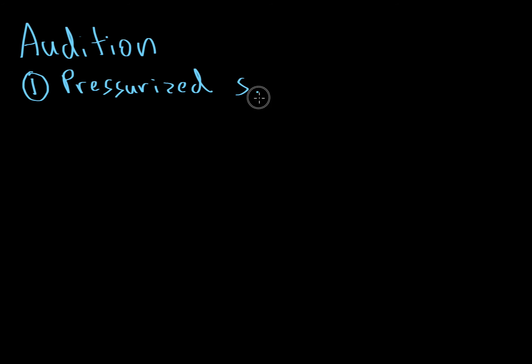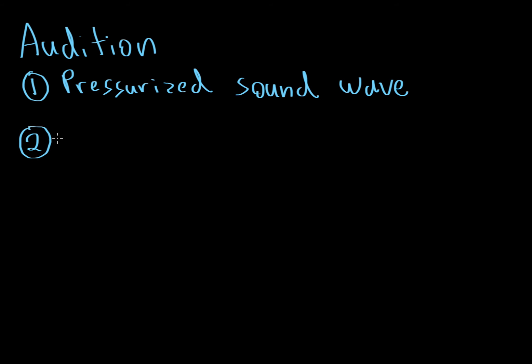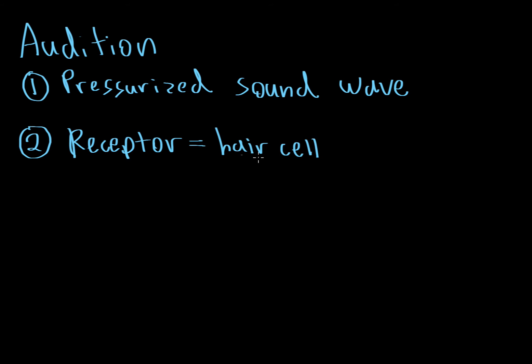In this video we're looking at our sense of sound, or audition. In order for us to hear something we need two things: first, some sort of environmental stimulus — in the case of sound, that stimulus is a pressurized sound wave. Second, we need a receptor in the body that can take this pressurized sound wave and convert it into a neural impulse that your brain can understand. In the case of sound, that receptor is known as a hair cell.